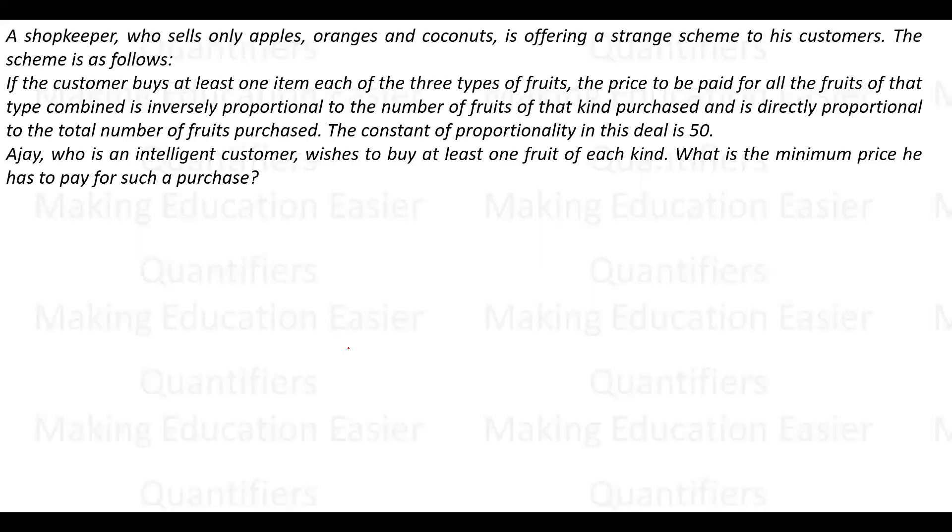A shopkeeper who sells only apples, oranges, and coconuts is offering a strange scheme. The scheme is: if the customer buys at least one item of each of the three types of fruit, the price to be paid for all the fruits of that type combined is inversely proportional to the number of fruits of that kind purchased and directly proportional to the total number of fruits purchased.